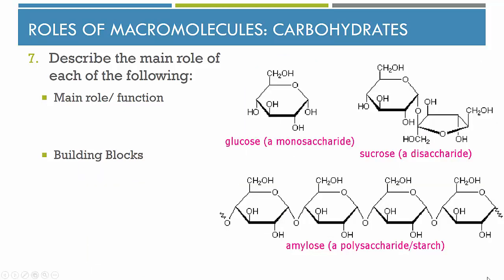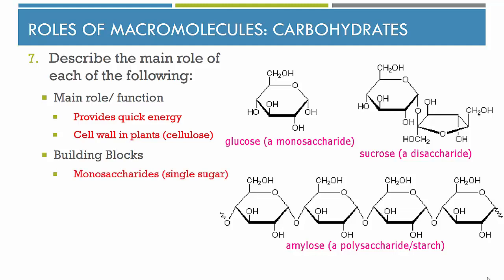Next we have carbohydrates. The main role for carbohydrates is to provide quick energy. They also make up certain structural components such as the cell wall in plants or the chitin exoskeleton in insects. The building blocks for carbohydrates are monosaccharides — a single sugar such as glucose. Linking two together through a dehydration synthesis reaction produces a disaccharide such as sucrose, which is table sugar. Repeating that many times and linking together many glucose molecules produces amylose, which is a polysaccharide, also called a starch.